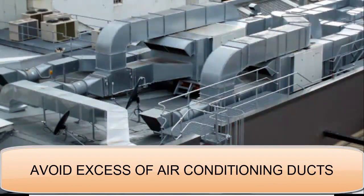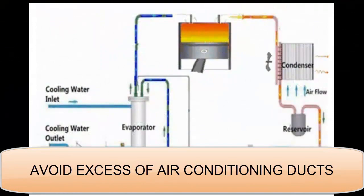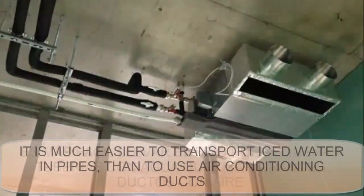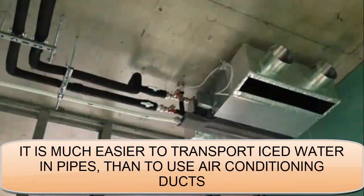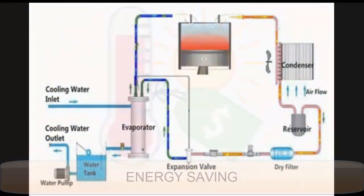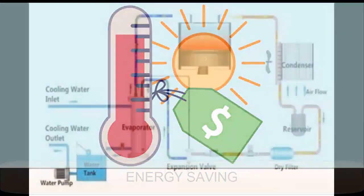E. Excess ducts are avoided throughout all the premises. F. The distribution of low temperature is carried out by means of pipe networks that carry the ice water to all the premises of the building. G. If the selection of the chiller is adequate, it can generate quite interesting efficiency values.